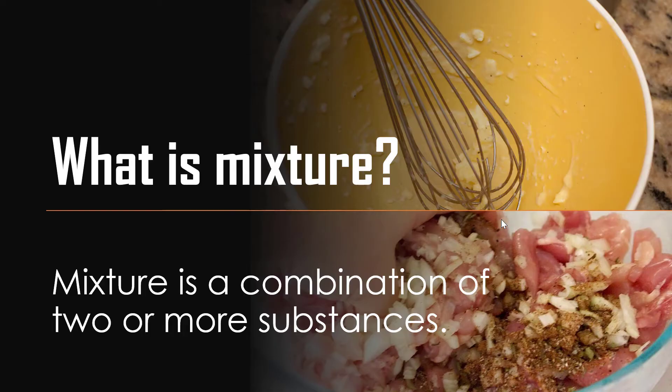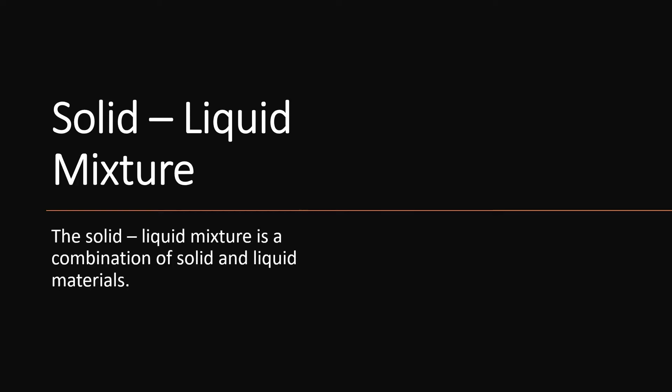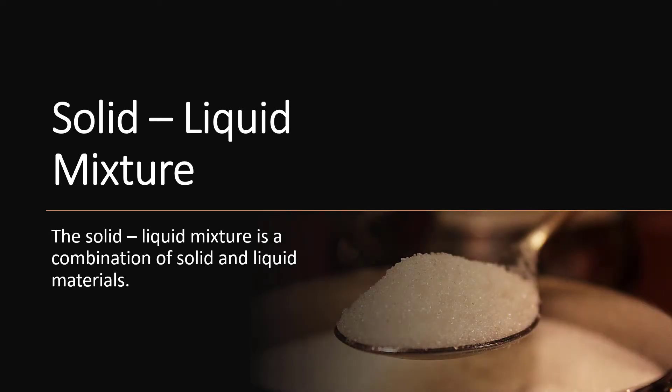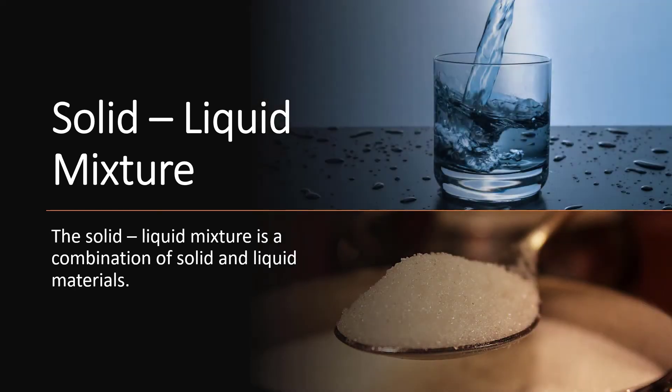This video lesson will focus only on the solid-liquid mixture. We have three classifications of matter — solid, liquid, and gas — but this time our focus is on solid and liquid mixtures only. The solid-liquid mixture is a combination of solid and liquid materials. For example, sugar and water: sugar is the solid while water is the liquid. When we combine these two, it is called a solid-liquid mixture.